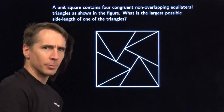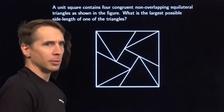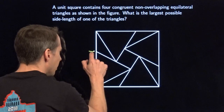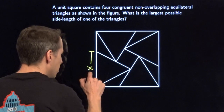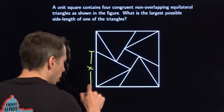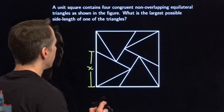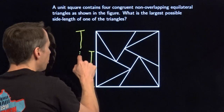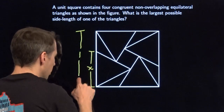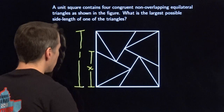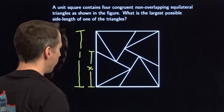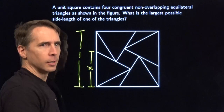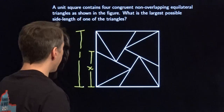Well, let's get in here and try something, because we can't ask him for help. To start off, I'm going to call the side length of each equilateral triangle x. And we know that this whole side of the square over here is one. Now what? I think I could use Harvey's help here.